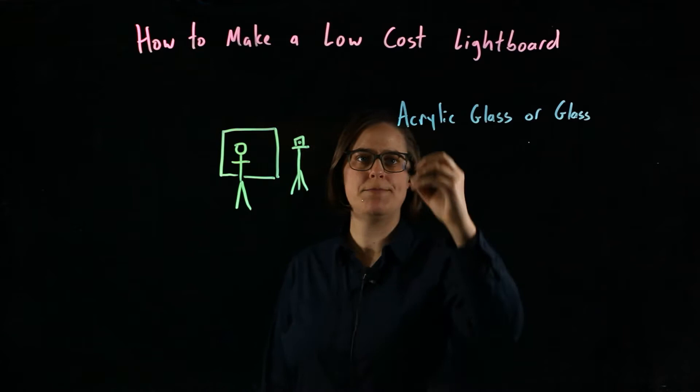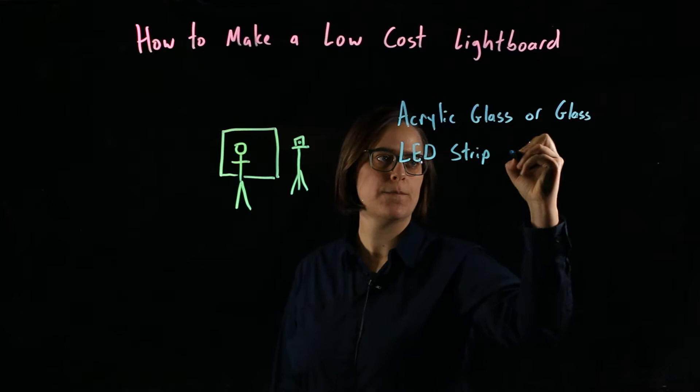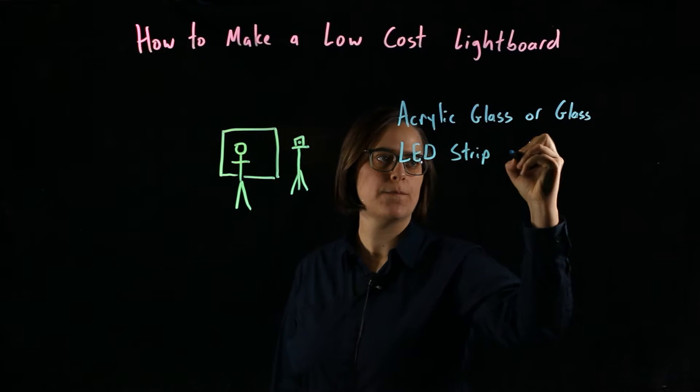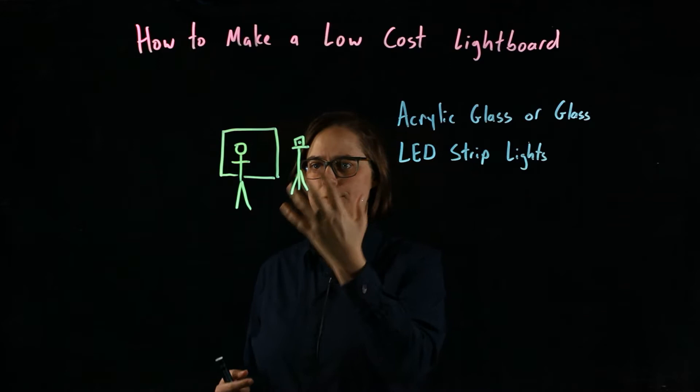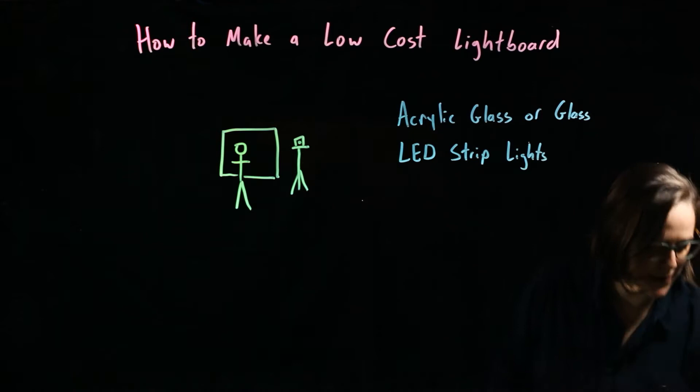You'll also need LED strip lights. LED strip lights. I have LED strip lights around the perimeter of my acrylic glass pointed inward. These are necessary to light up the text. So this is the reason it's a light board. I have light around my acrylic glass.